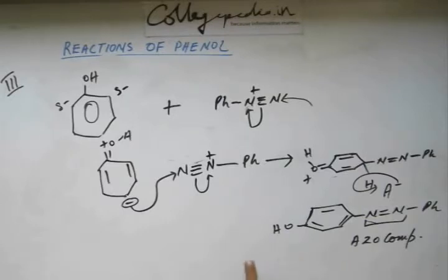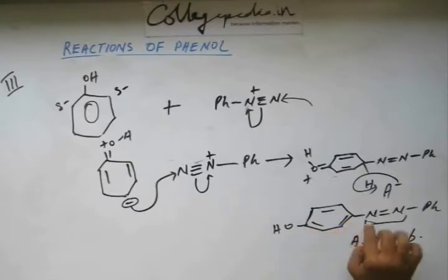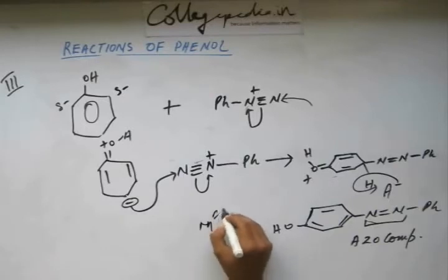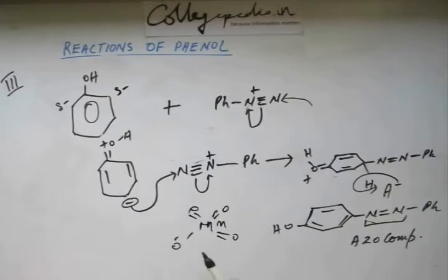Now as you can see the extent of conjugation—there are 3 pi bonds here then there is a pi bond with nitrogen and there are 3 pi bonds in the phenyl ring. So there are 7 pi bonds in conjugation and because of this conjugation this azo compound have a color because you must be knowing that potassium permanganate is purple in color.